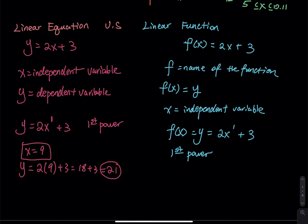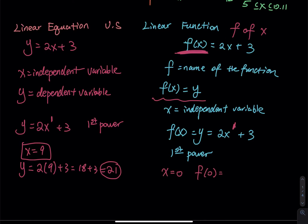Independent means you can pick whatever value you want. If you pick x equals 9, you plug it into the equation: 2 times 9 plus 3 equals 18 plus 3, which is 21. That value depends on x, which is why we call y the dependent variable and x the independent variable. For a linear function, the difference from an equation is instead of using y, we use f of x. f is the name of the function — you can call it r of x, g of x, p of x, whatever you like. f of x is the same thing as y.